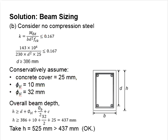Having known this number, you can compute the overall beam depth. The beam depth should be at least d plus the shear link, plus half the size of the reinforcement bar, plus the cover. Which in this case, you should have at least 437 mm beam depth. In this case, we assume the beam height is 525 mm.